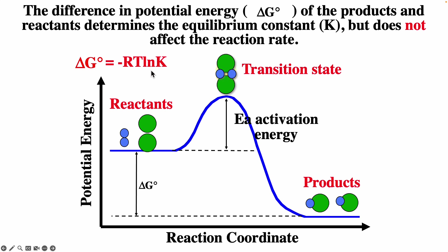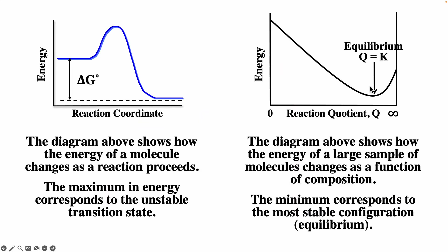These two things are a bit separate: activation energy is how fast the reaction goes, and the difference in energy between products and reactants dictates whether you have more products or more reactants at equilibrium. When talking about equilibrium, we use a plot of energy versus reaction quotient, and the minimum tells us where equilibrium occurs. Most systems tend towards the lowest energy.